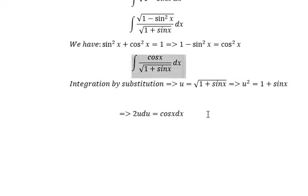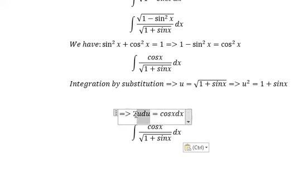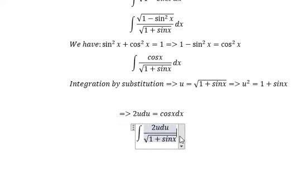Now we need to change this integral. Cosine x dx, we change to 2u du. About the square root, we change to u.